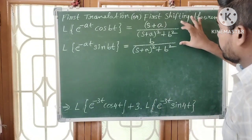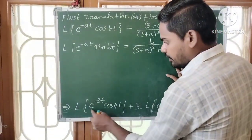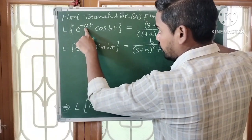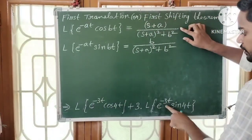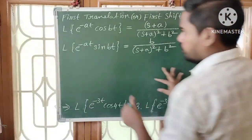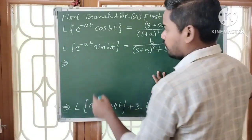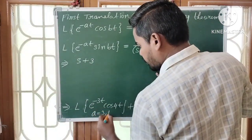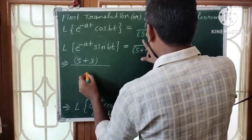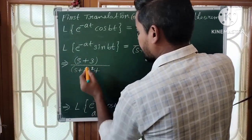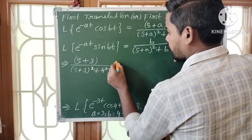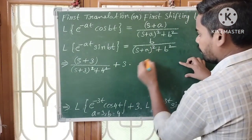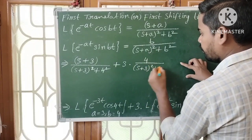Now I am going to use these two formulas. For L{e^(-3t)·cos4t}, comparing with the first formula, a = 3 and b = 4. So it equals (s+3) divided by (s+3)² + 4². For the second term, 3 into L{e^(-3t)·sin4t}: b = 4, so it equals 3 times 4 divided by (s+3)² + 4².